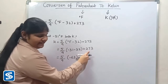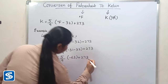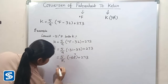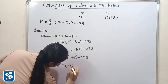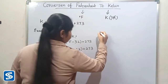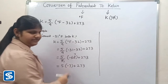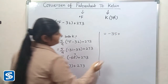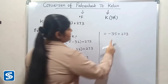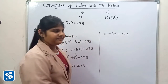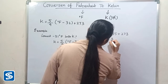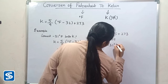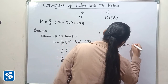Dividing minus 63 by 9 gives minus 7, so 5 × (−7) equals minus 35. Then minus 35 plus 273 equals 238. Therefore, minus 31 degree Fahrenheit is equal to 238 Kelvin.